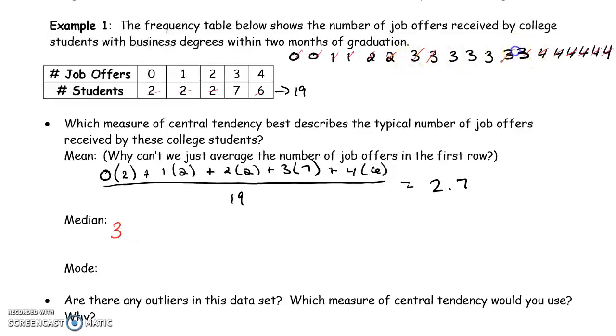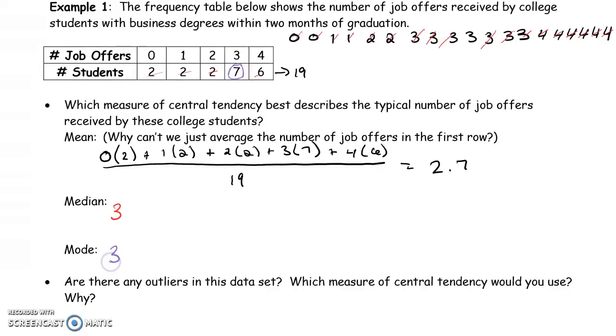It happens to be that three, but I don't have to do it that way if I can identify that from the table. Mode is going to be whichever has the largest occurrence or frequency. That's seven, so three job offers is also the mode.